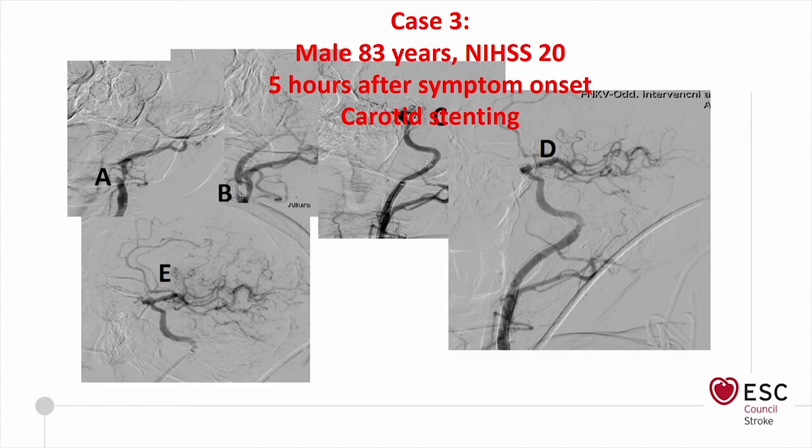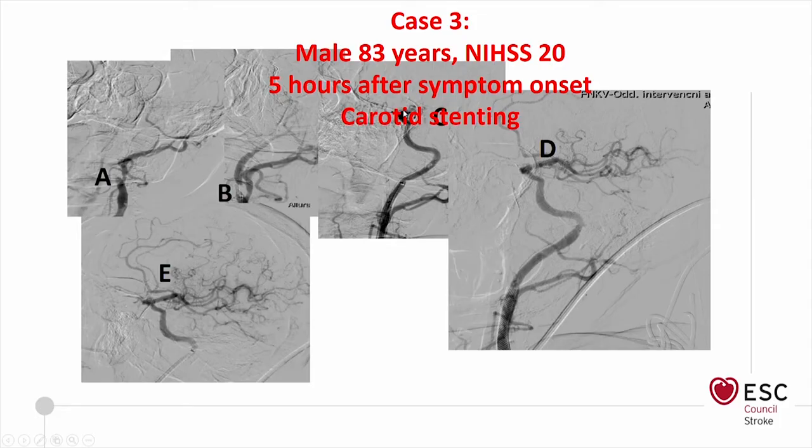I will share some cases and invite you to comment. I start with case three. This is an 83-year-old male who came in with a severe stroke, NIHSS score 20, five hours after symptom onset — a quite long delay in an elderly gentleman. Angiography showed proximal occlusion of the internal carotid artery, with a second occlusion distally after guide wire crossing — a classical tandem lesion. Thrombectomy was performed and complete reperfusion achieved, with angiographic success of TICI 3.